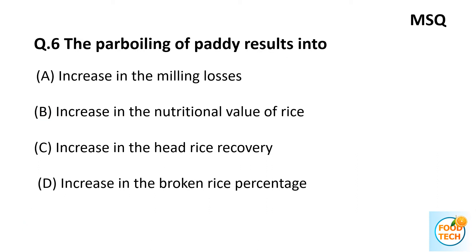Question 6: The par-boiling of paddy results in: A. Increase in milling losses, B. Increase in nutritional value of rice, C. Increase in head rice recovery, D. Increase in broken rice percent. It is a multi-select question. The answers are B and C — increase in nutritional value of rice and increase in head rice recovery.